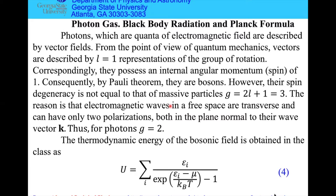Photons are quantum electromagnetic field. Electromagnetic fields are described by vectors, by electric and magnetic field. That means from the point of view of quantum mechanics, vectors are described by L=1 representations of the three-dimensional rotation group. Because spin equals one, by Pauli's theorem, photons are bosons.